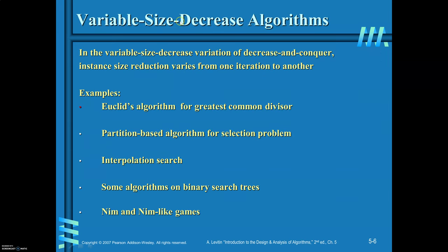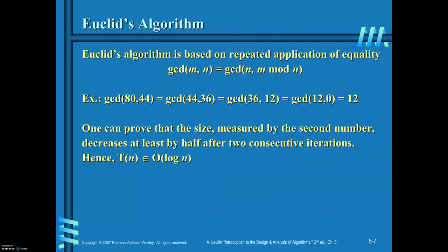In variable size decrease, as mentioned, the problem size reduction varies from iteration to iteration. For example, to find the GCD of 80 and 44, the problem size is reduced like this in the first iteration, then like this in the next, and again in the next. So the problem reduction is obviously dependent on the second number.